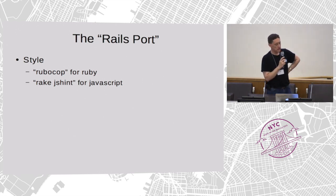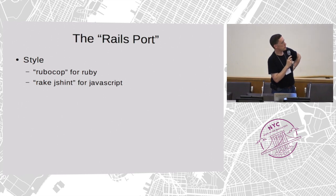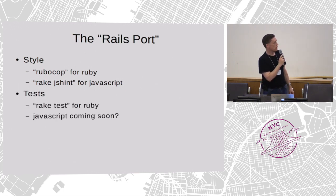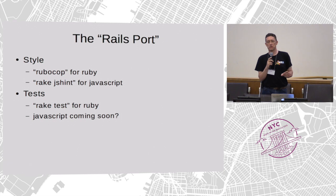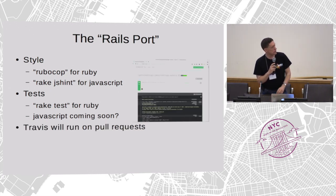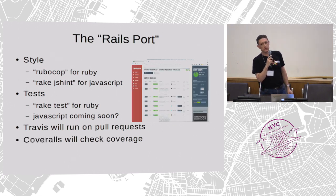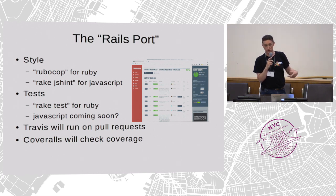Once you've written some code, please run our style checkers on it. We have RuboCop set up for Ruby and JSHint set up for JavaScript. Even more importantly, run the tests. If you send us a pull request, Travis will run the tests and the style checking and will tell us. Once Travis is finished, Coveralls will tell us what the coverage is like. We have 95% coverage for the Ruby code at the moment and we'd quite like to keep it that way. So if you're writing new code, please write some tests for it on the server side with the Ruby code.